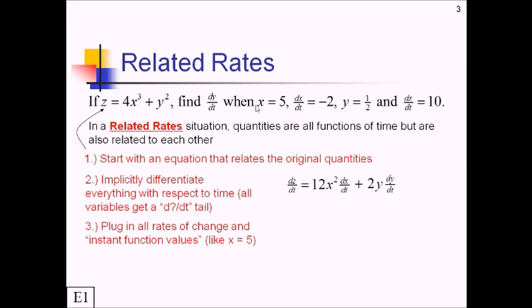Like this x equals 5 that they gave us. Now I call this instant values because this x equals 5, this is not something you could have just plugged in in the very beginning into the original equation. x only equals 5 at a certain point in time. After you take the derivative of this thing and you've got it differentiated with respect to time, at that point you're allowed to plug in things that are only true at a certain time like x equaling 5 and y equaling 1 half. Not before then.